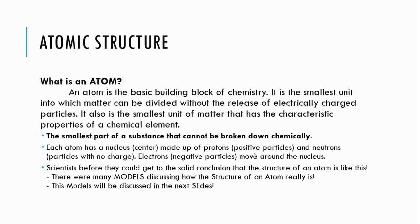Inside the atom there are charged particles. We have some atomic particles with charge and some that don't have any charge. The ones that are charged are the proton and electron. The one that does not have any charge at all is the neutron. The smallest part of a substance that cannot be broken down chemically is an atom.